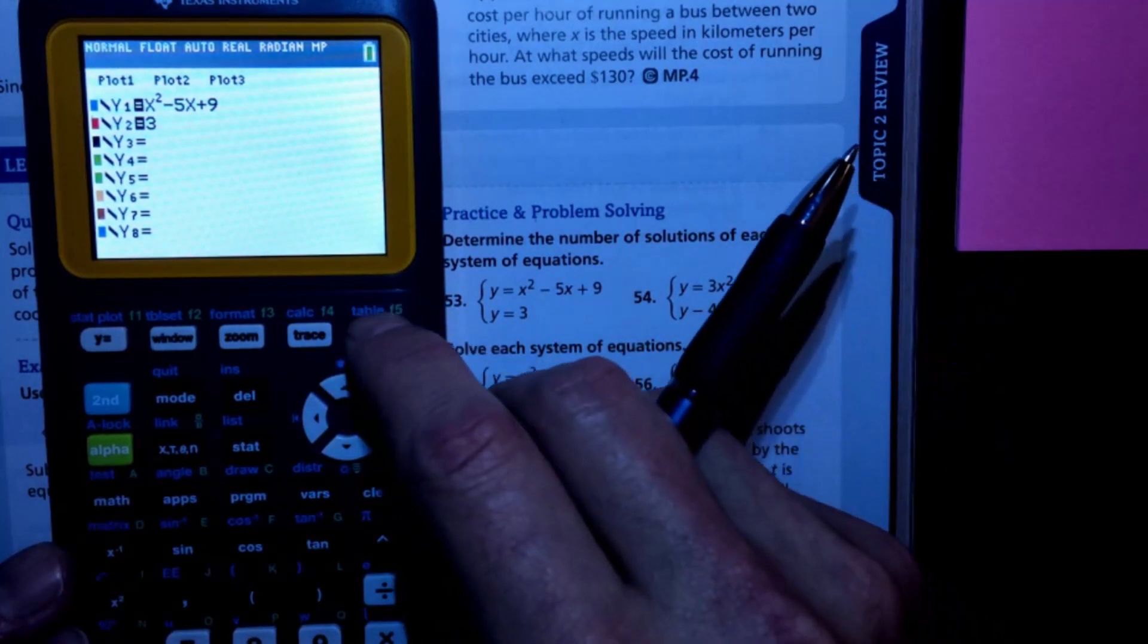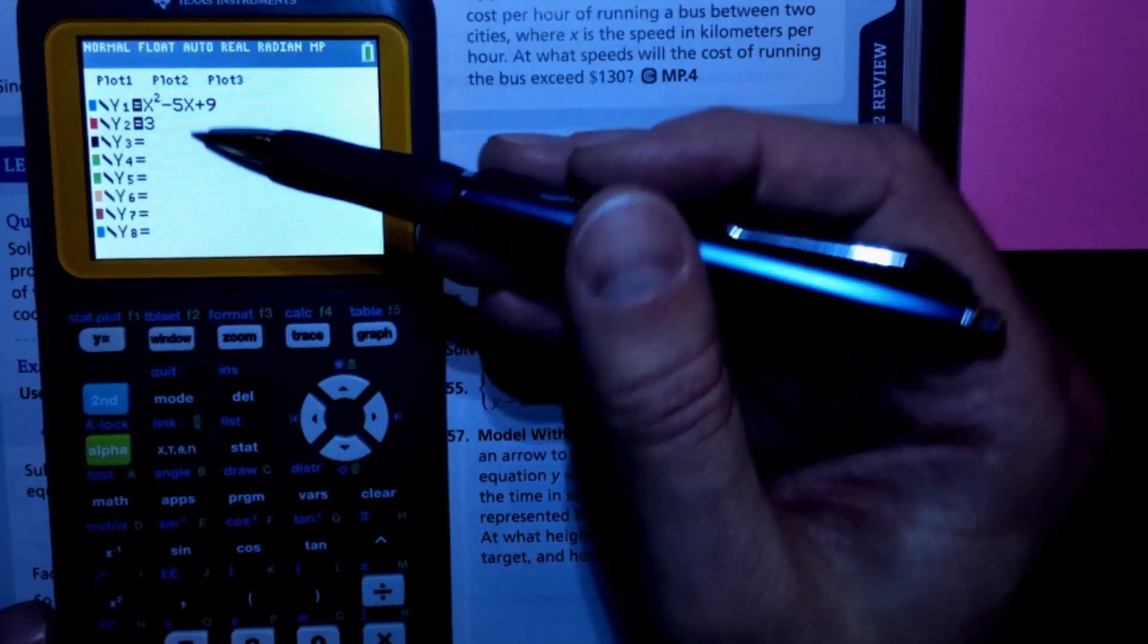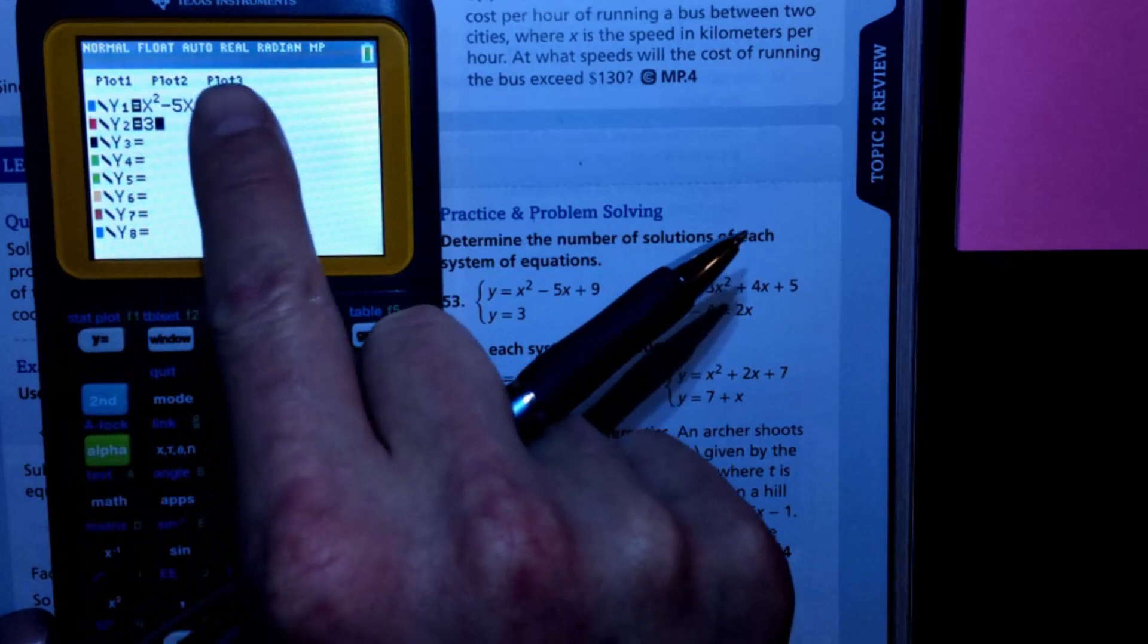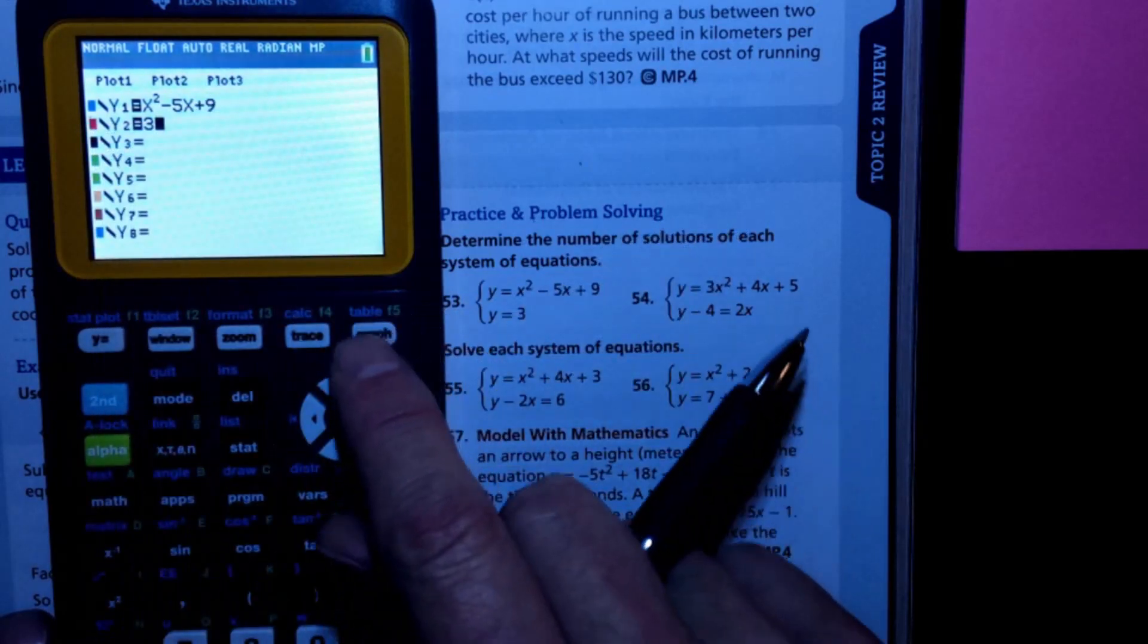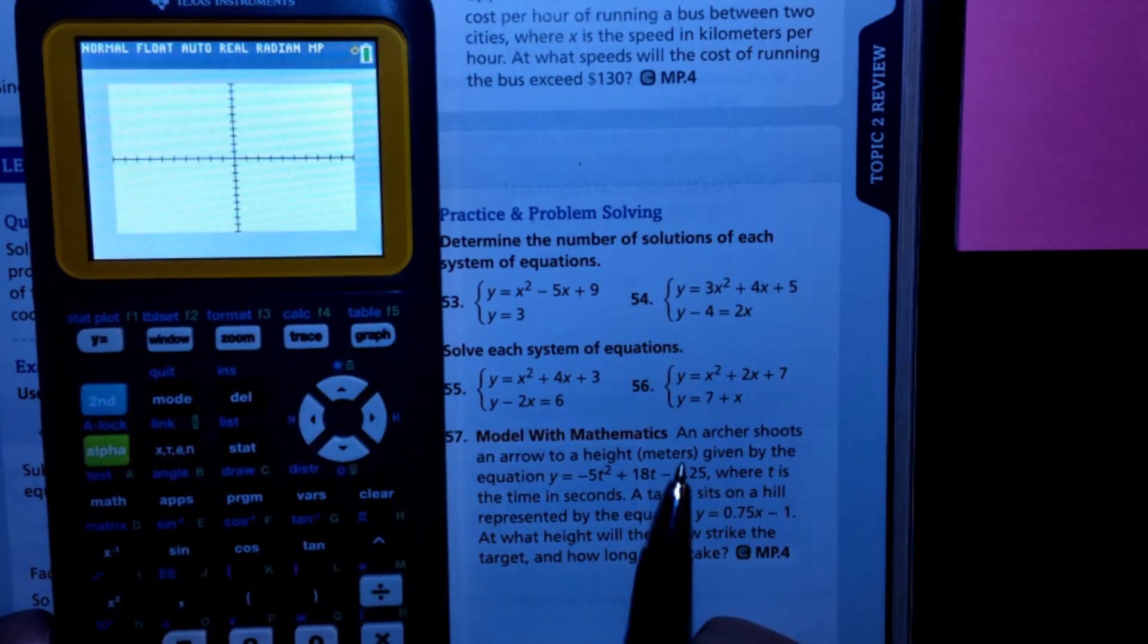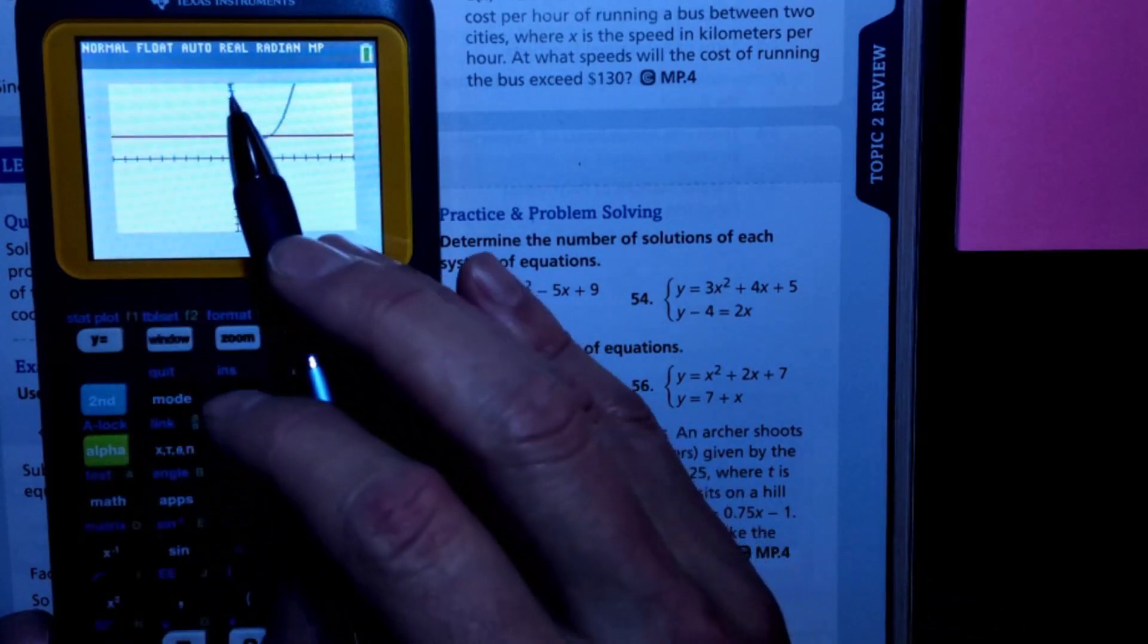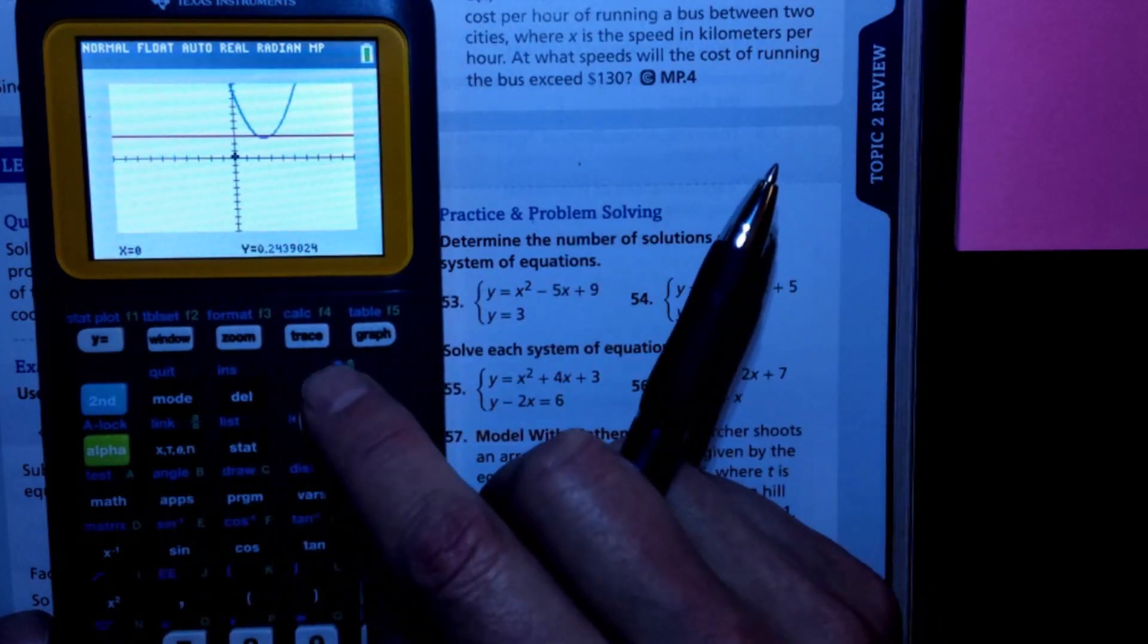So when I go to graph, what I would do is on your note card or your sheet of paper, just make sure that you do know that you should not have your plots on when you do this. And when I go to hit graph, I might be in the wrong location, so I probably just want to hit zoom standard. Zoom standard sets it at a negative 10, positive 10, positive 10, negative 10 kind of window.